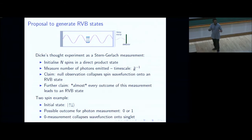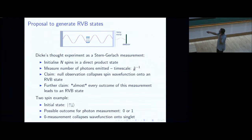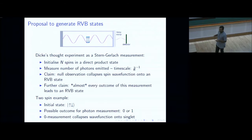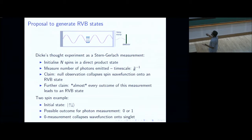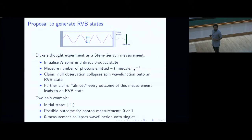To get a feel for this, consider the simple Dicke thought experiment with two spins: one up, one down. With probability half it's a singlet, with probability half it's a triplet. If you put up-down inside the cavity and ask how many photons will come out, the singlet is an eigenstate with S_total = 0, so it will not emit. The outcomes are zero or one photon: if you see one photon, the state collapses to down-down; if you see zero photons, the state collapses to a singlet — up-down minus down-up.